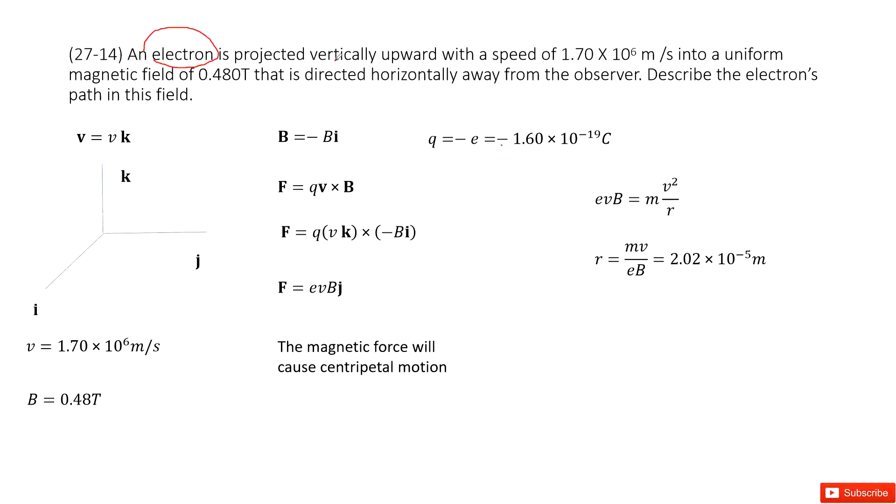And then it's projected vertically upward. So the velocity is upward in the k-direction. And this v number we write it there.